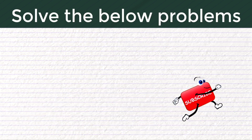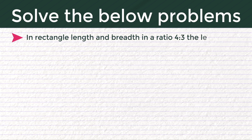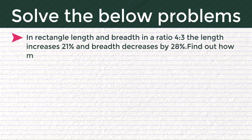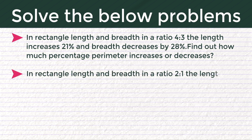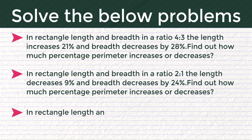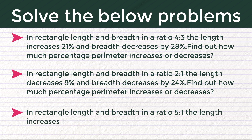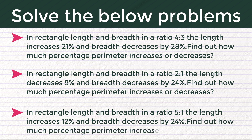If you understand this concept, try solving the problems below and comment your answers. Problem 1: In a rectangle with length and breadth in a ratio of 4 is to 3, the length increases 21% and breadth decreases by 28% — find the percentage change in perimeter. Problem 2: Ratio 2 is to 1, length decreases 9% and breadth decreases by 24%. Problem 3: Ratio 5 is to 1, length increases 12% and breadth decreases by 24%.